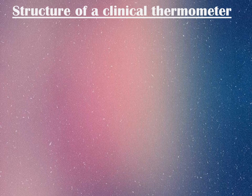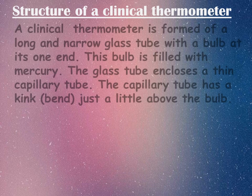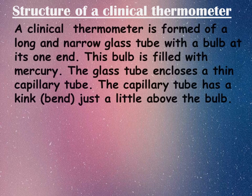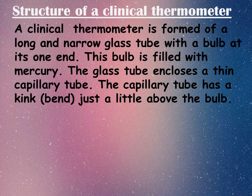Now let us discuss the structure of a clinical thermometer. A clinical thermometer is formed of a long and narrow glass tube with a bulb at its one end. This bulb is filled with mercury. The glass tube encloses a thin capillary tube. The capillary tube has a kink or bend just a little above the bulb.